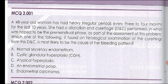A 48-year-old woman has had heavy irregular periods every three to four months for the last ten years. She had a dilatation and curettage performed in what was hoped to be the premenstrual phase as part of the assessment of this problem. Which one of the following, if found on histological examination of the curettings from this DNC, is most likely to be the cause of her bleeding pattern?